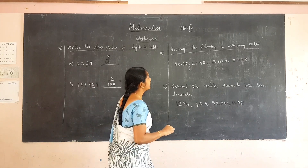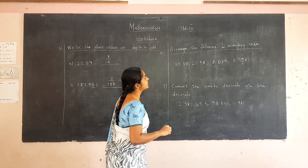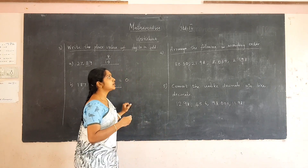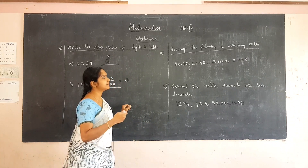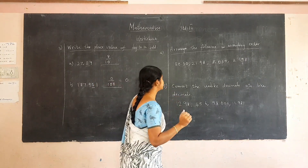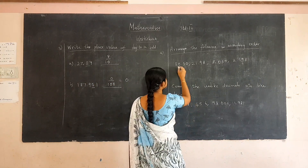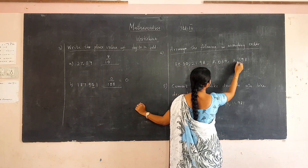Next, arrange the following numbers in ascending order. Ascending order means we have to arrange the numbers from smallest to largest. First we have to look at the whole number part.